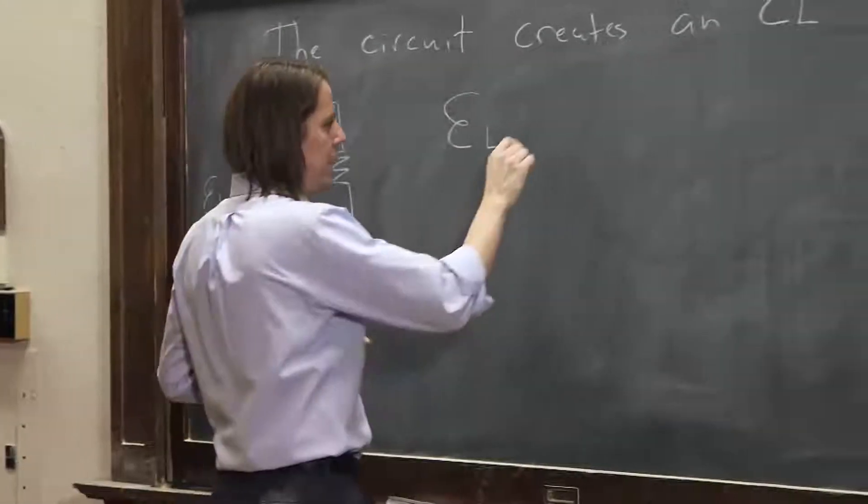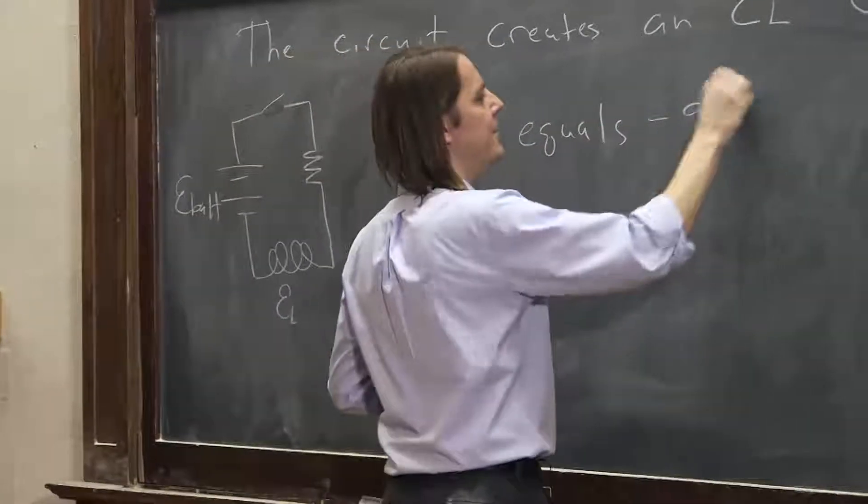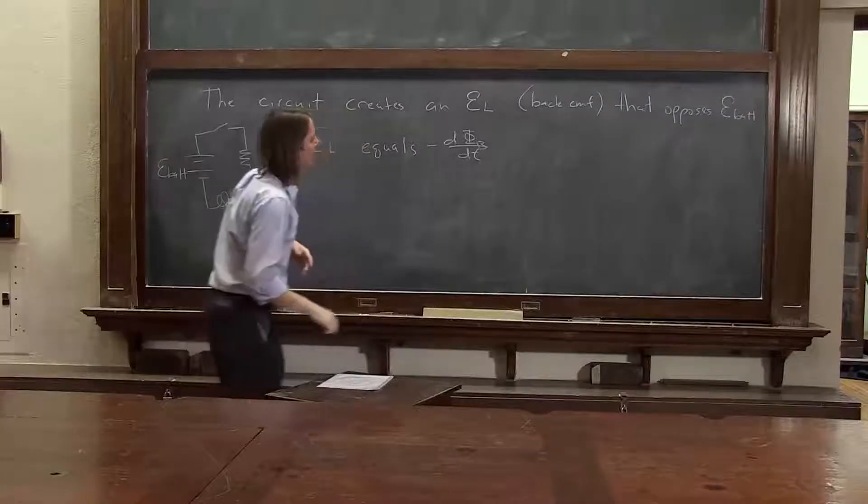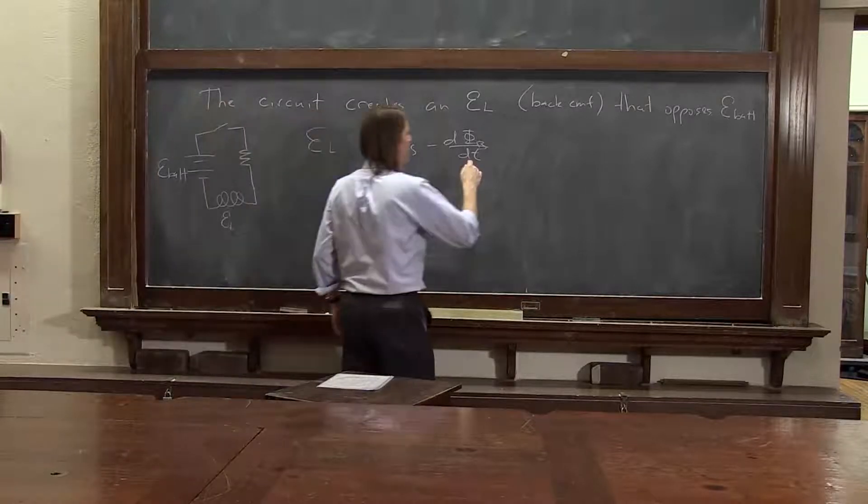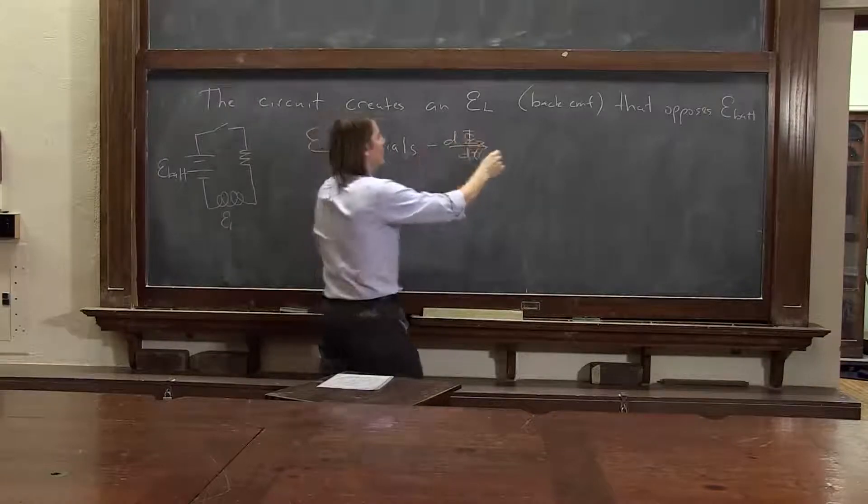Well, it's equal minus d phi b dt. That's from Faraday's law of induction. But we don't want to really describe a circuit in terms of phi.